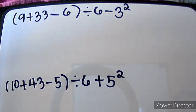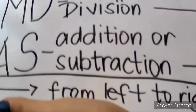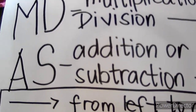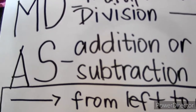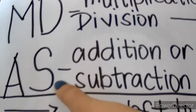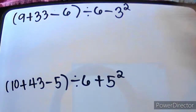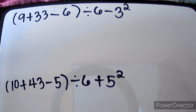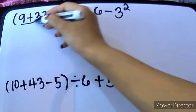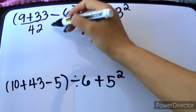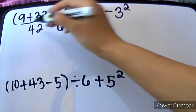We have two operations which is addition and subtraction inside the grouping symbol. We will just be following the GEMDAS rule — addition or subtraction as they appear from left to right. As you can see, addition and subtraction lang yan, so we will just be doing it from left to right. So, 9 plus 33 will give us 42. And then we will be having minus 6.